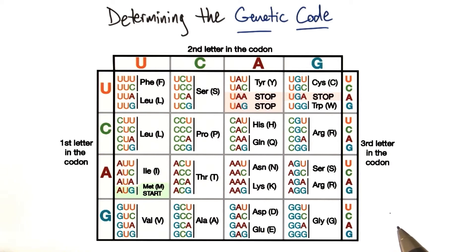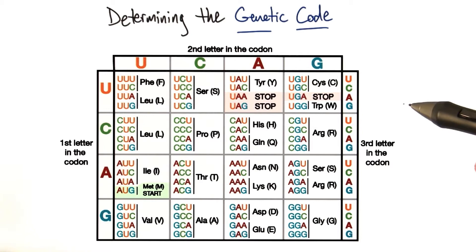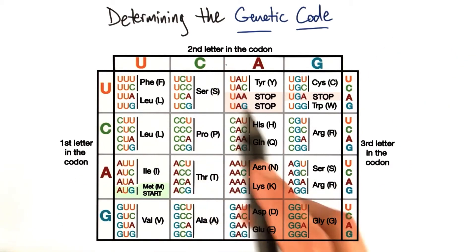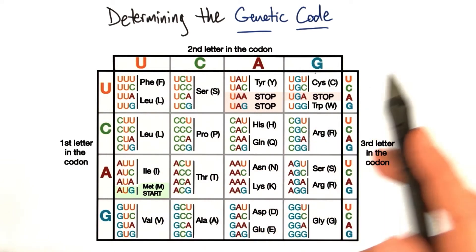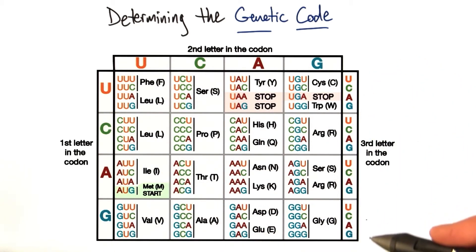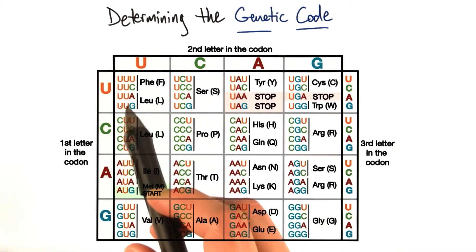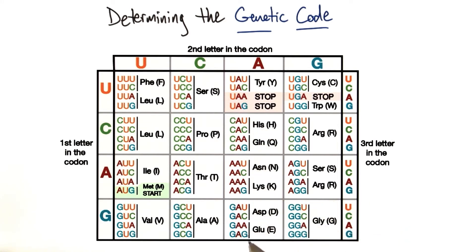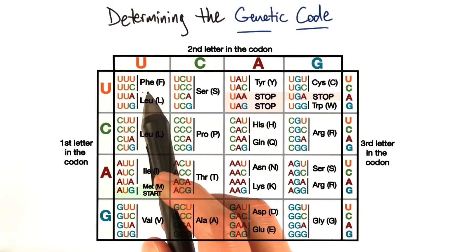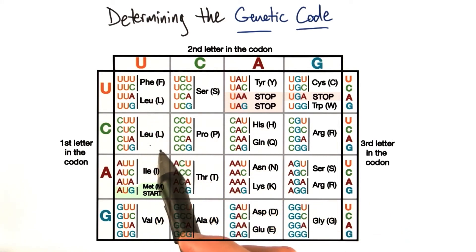First, I want you to just stare at it for a minute and try to read it. The first letter in the codon, the second letter in the codon, the third letter in the codon — we have UCAG, UCAG, and then each combination for every row. You can see each codon is spelled out in the individual box, and beside it is the amino acid that it codes for.